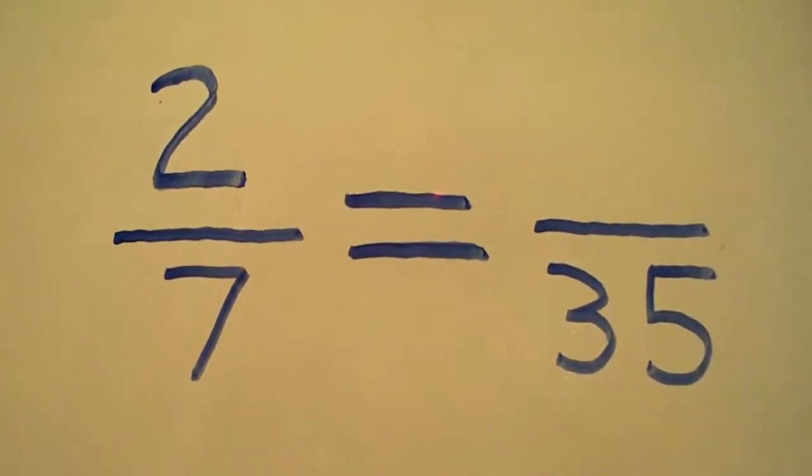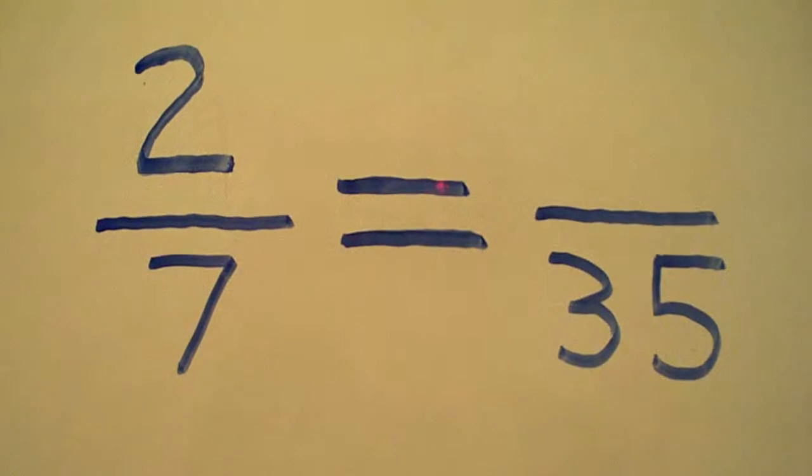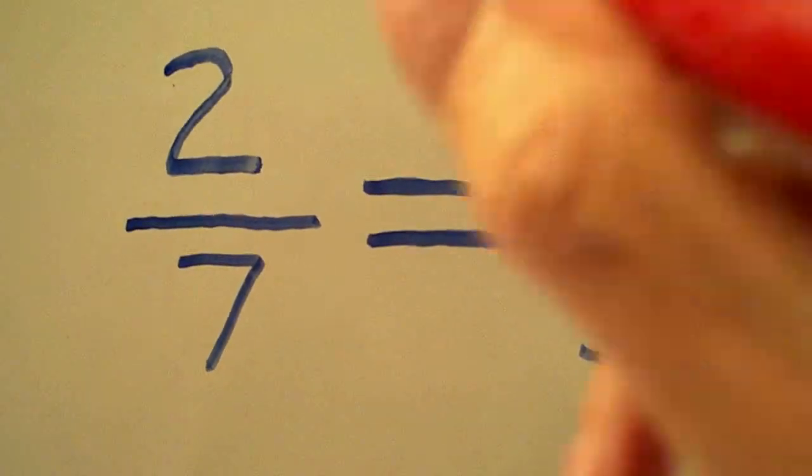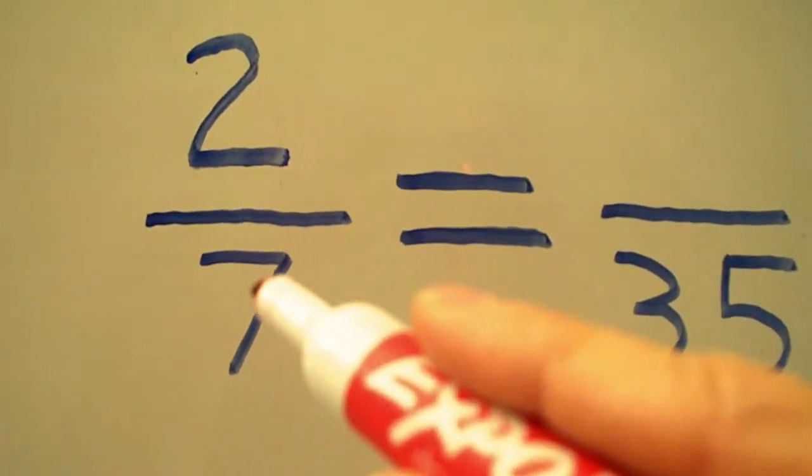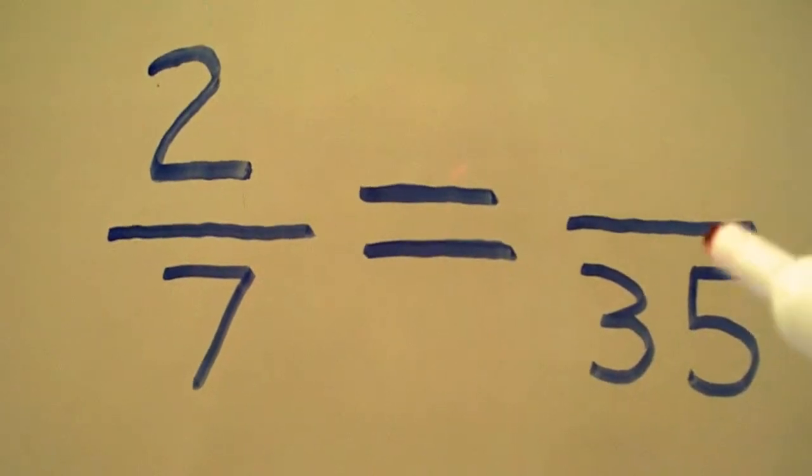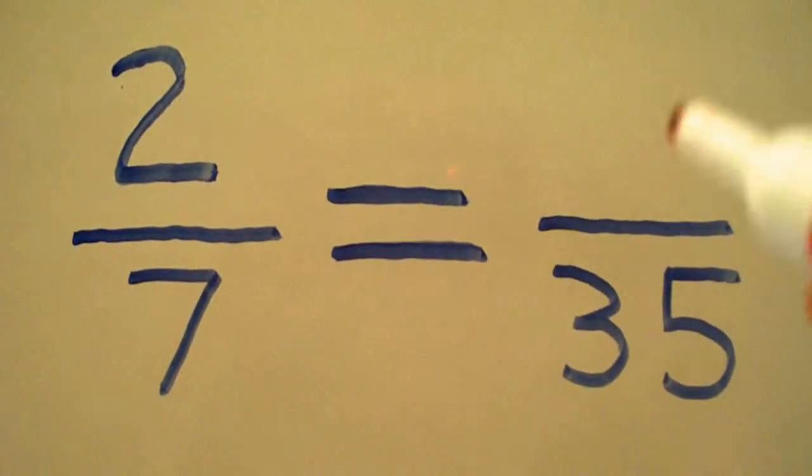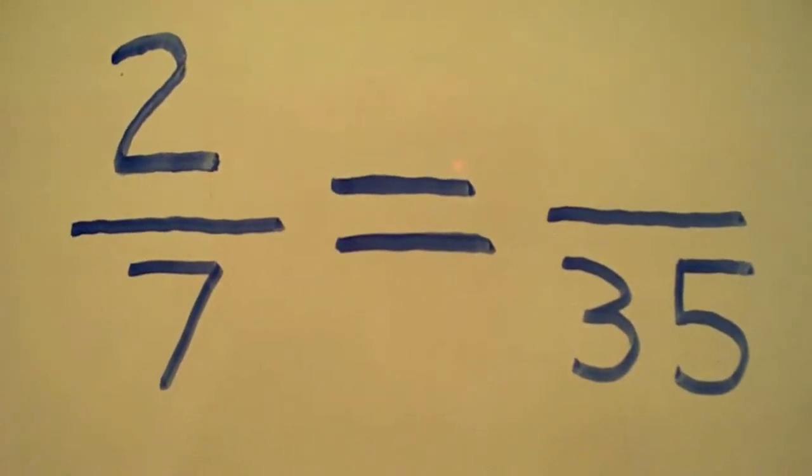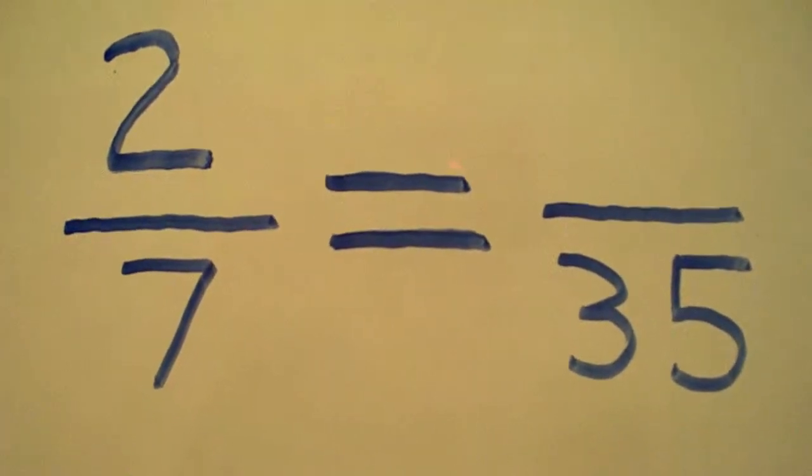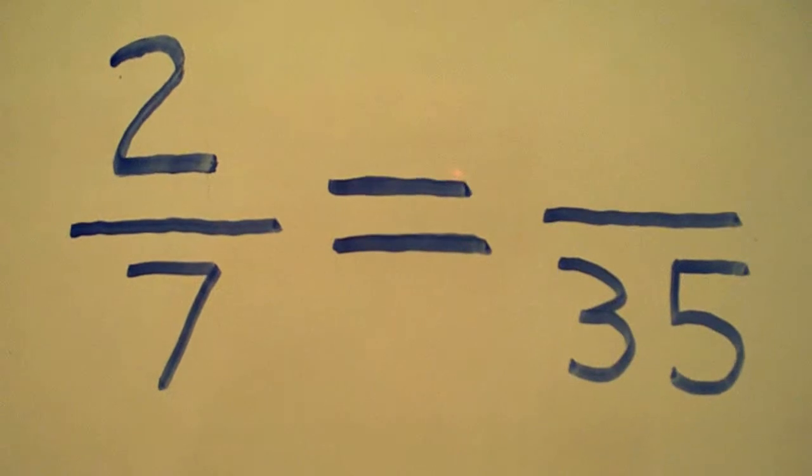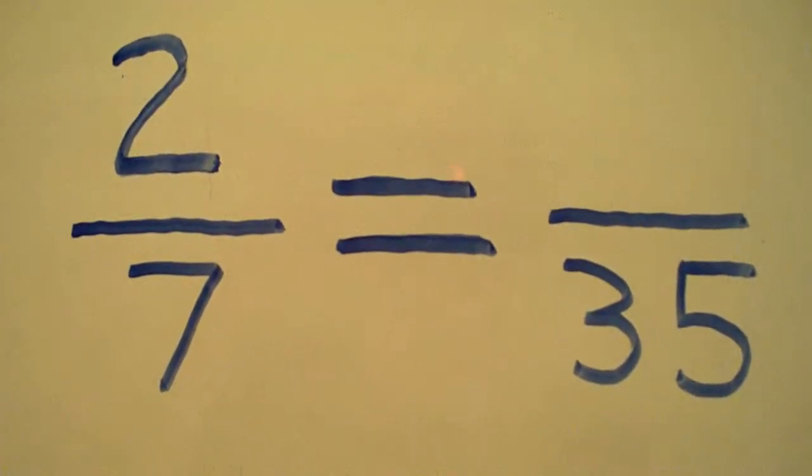Sometimes we are given a proportion that is not totally complete. Here we've got two-sevenths, and on the other side of the equal sign we're asked to fill in the missing part to make these fractions proportional. The easiest way to do this is to cross-multiply and then divide by the number that's left over.